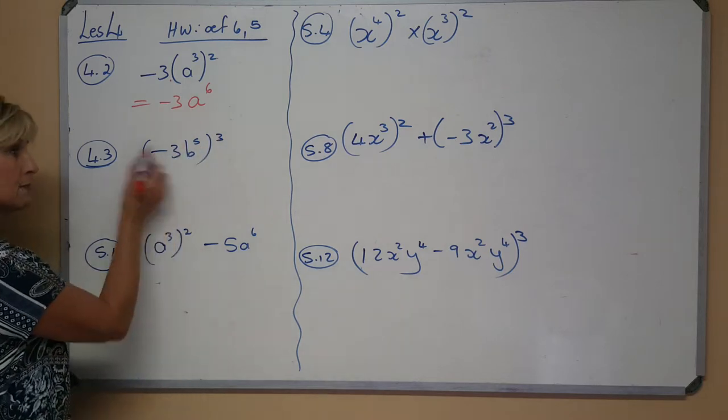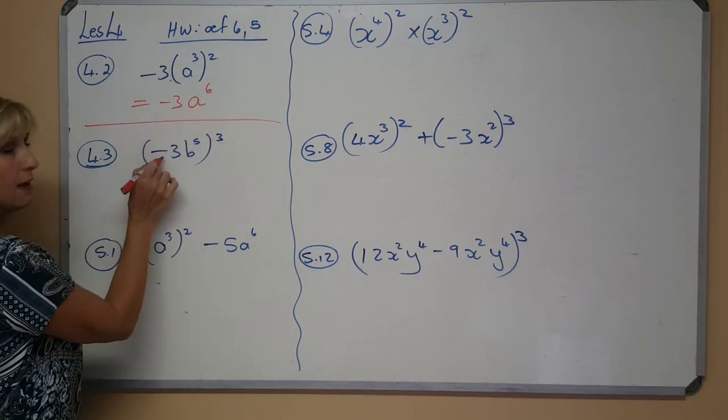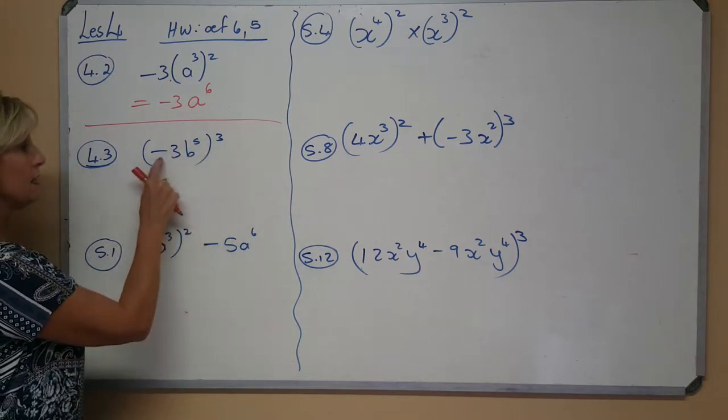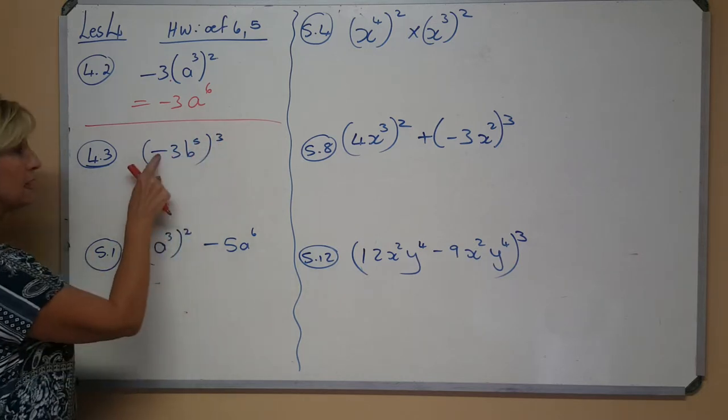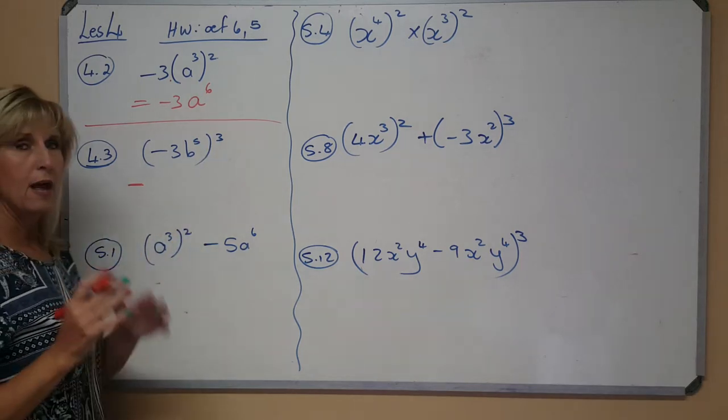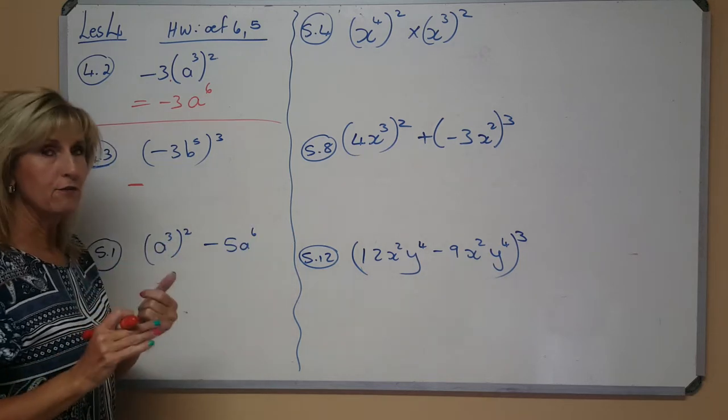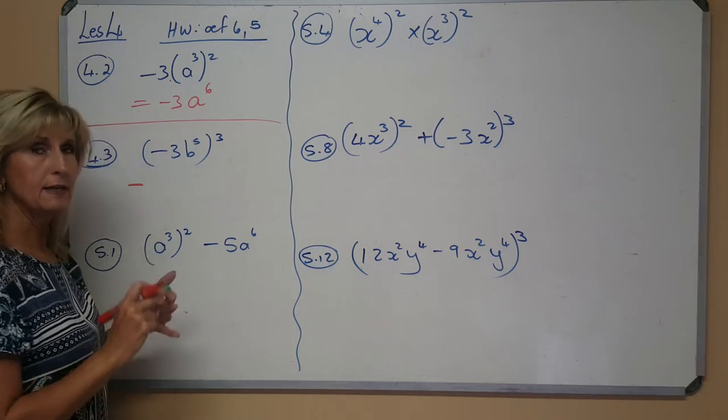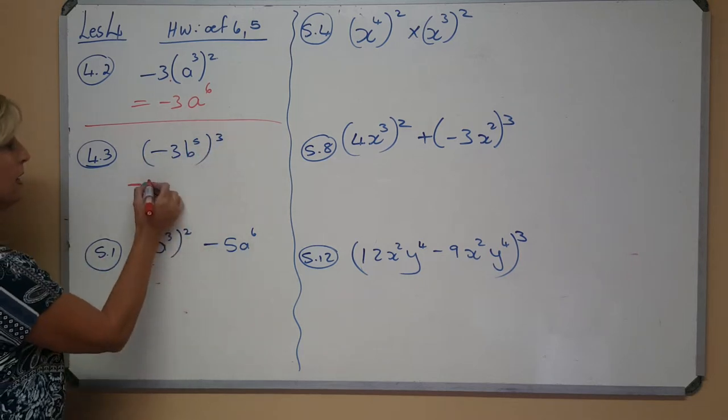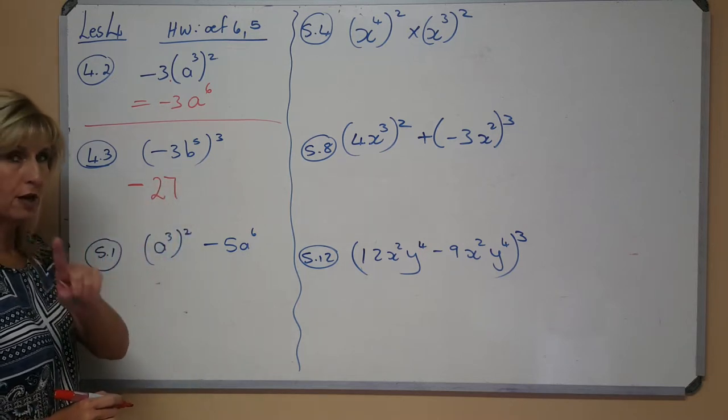For this one, the exponent is by the negative. If an exponent was even over a negative value there, it would have become positive, but a negative to an uneven exponent is negative. Remember, every term consists of a sign and a number and then variables. So first the sign to that power, then the 3 to that power is 3 to the 3, and you can immediately write 27.